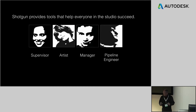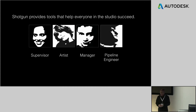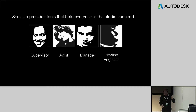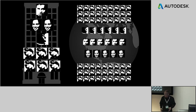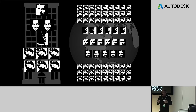The tools a supervisor needs are very different from the tools that artists need, and different again from what your manager and pipeline engineer need. That's the beauty of Shotgun — it has all those tools for individual personas inside your pipeline so they're focused on what they need to be doing. No matter if your facility is five people or a thousand, in one building or around the world, Shotgun connects everyone because you're all accessing a Shotgun project through the browser.